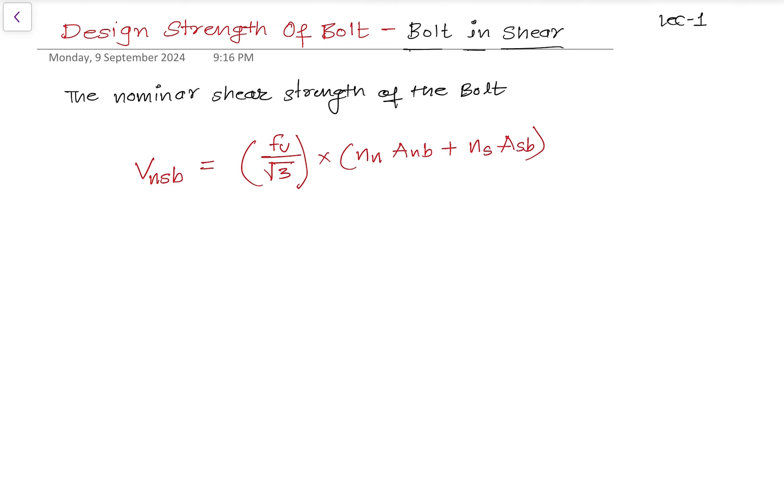Now let's understand every single terminology to calculate this shear strength of the bolt. I'm going to do a full detailed series on steel structure from start to end. The A_sb is the nominal plane shank area of the bolt.